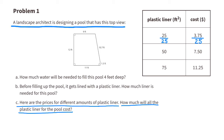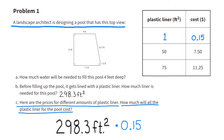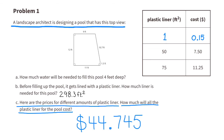25 divided by 25 equals 1, and $3.75 divided by 25 equals 15 cents. That means you can get one square foot of liner for 15 cents. So we multiply 298.3 square feet times 15 cents — the total cost for the pool liner would be $44.75.